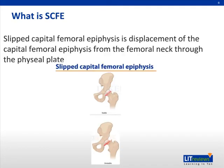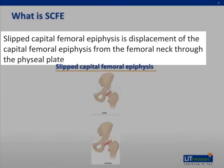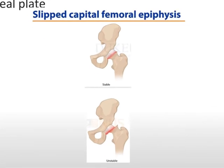So, what is SCFE? Slipped capital femoral epiphysis is displacement of the capital femoral epiphysis from the femoral neck through the physeal plate. A diagram is provided to help visualize this definition. The top diagram shows a normal or stable hip, and the picture below demonstrates the slippage of the capital femoral epiphysis that causes the instability.